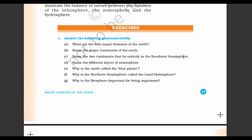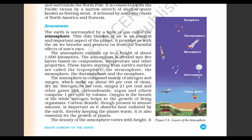Name the two continents that lie entirely in the Southern Hemisphere — they are Antarctica and Australia. Africa and South America have a little portion in the Northern Hemisphere. Name the different layers of atmosphere: troposphere, stratosphere, mesosphere, thermosphere, and last is exosphere.